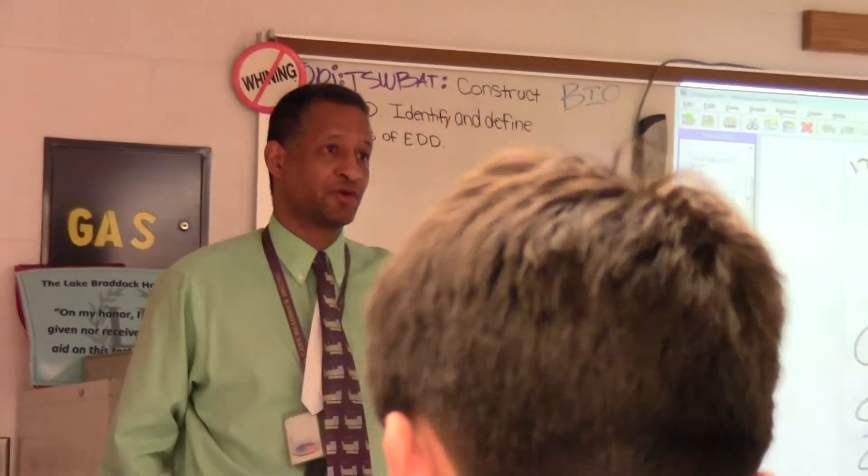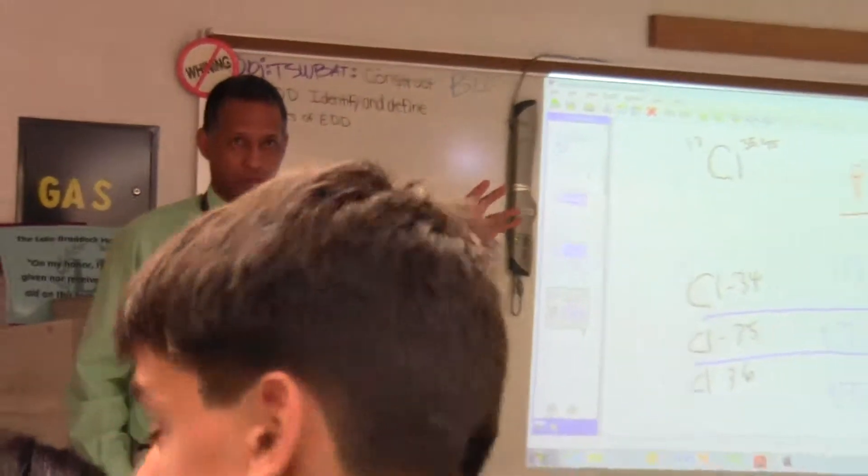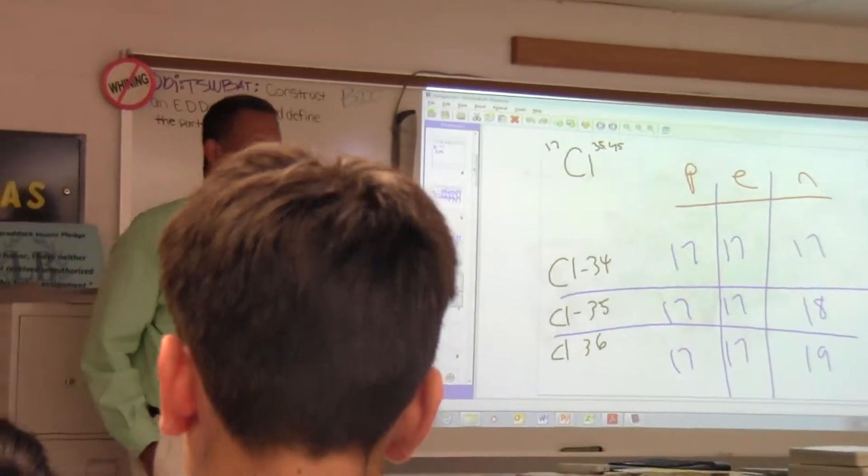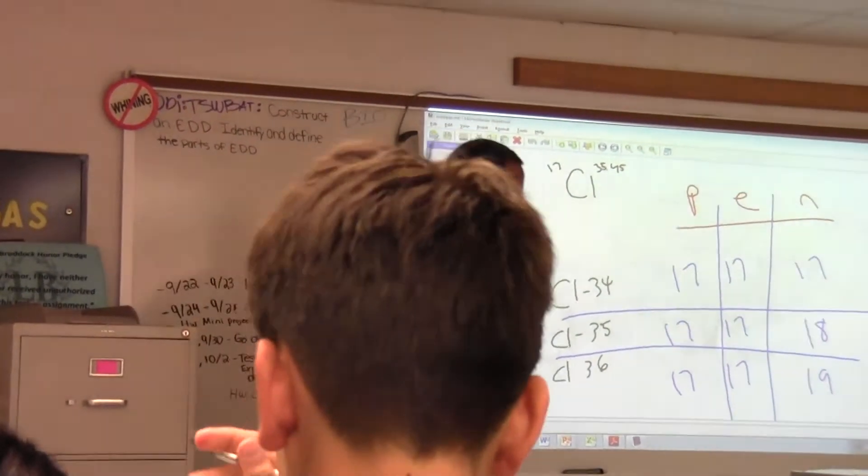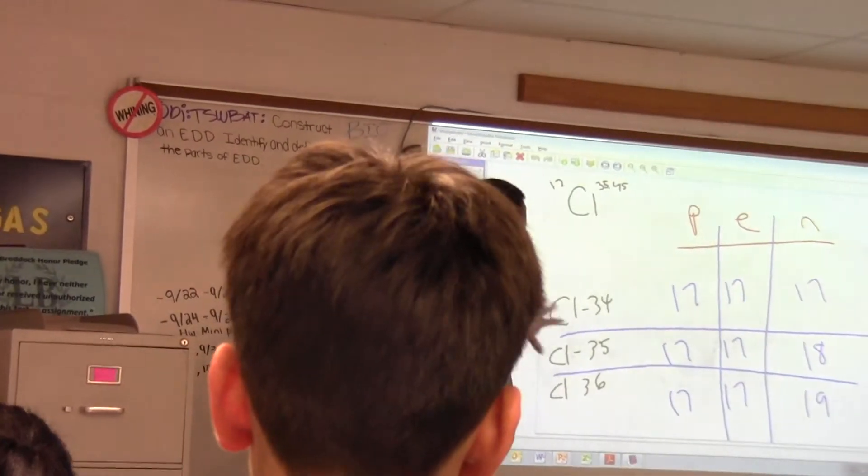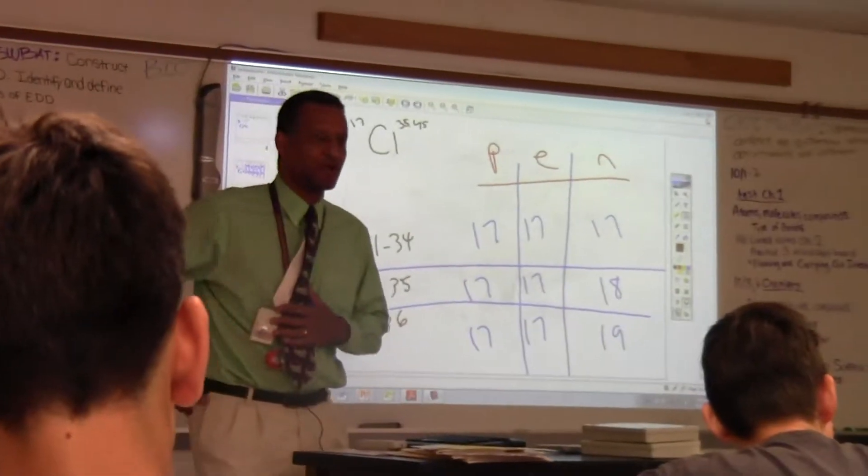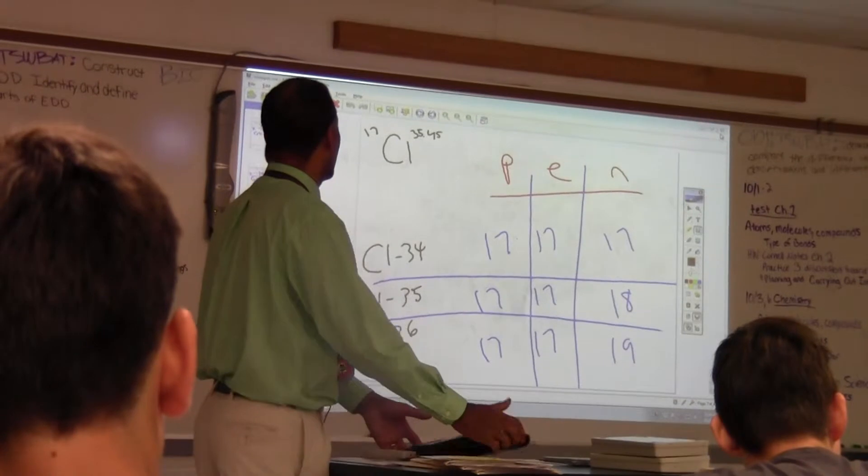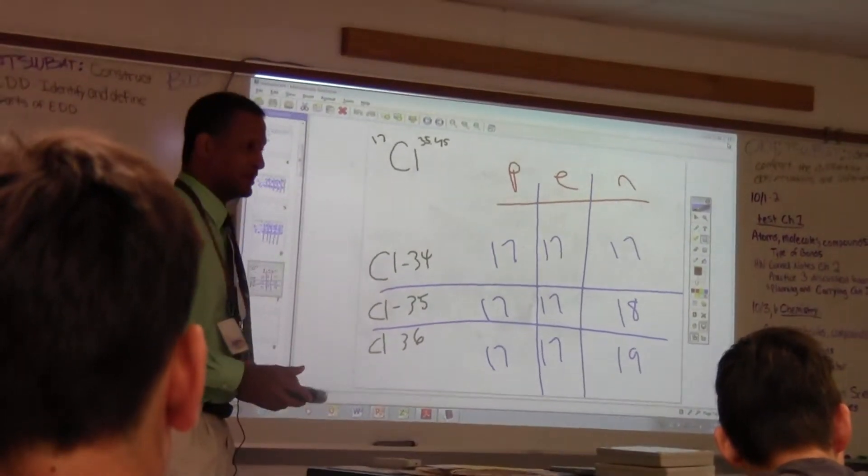Now there's one atom and it doesn't have any neutrons at all. What's that? Hydrogen. Simplest one. Alright? And so, you guys, you're checking your answers. Let's go ahead and define the difference between these.